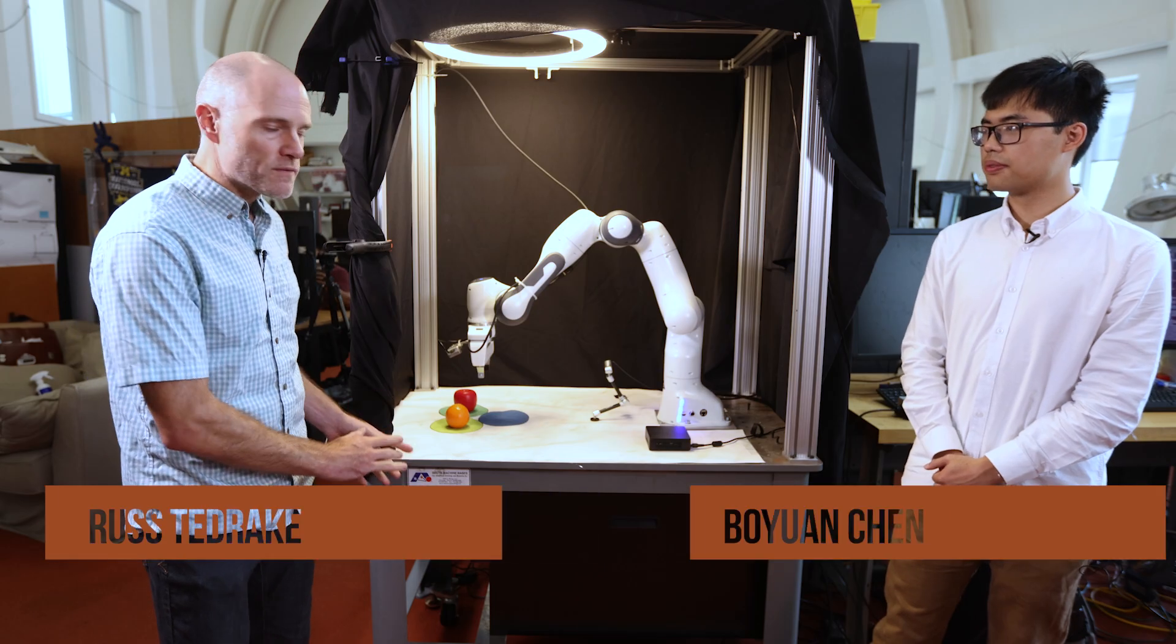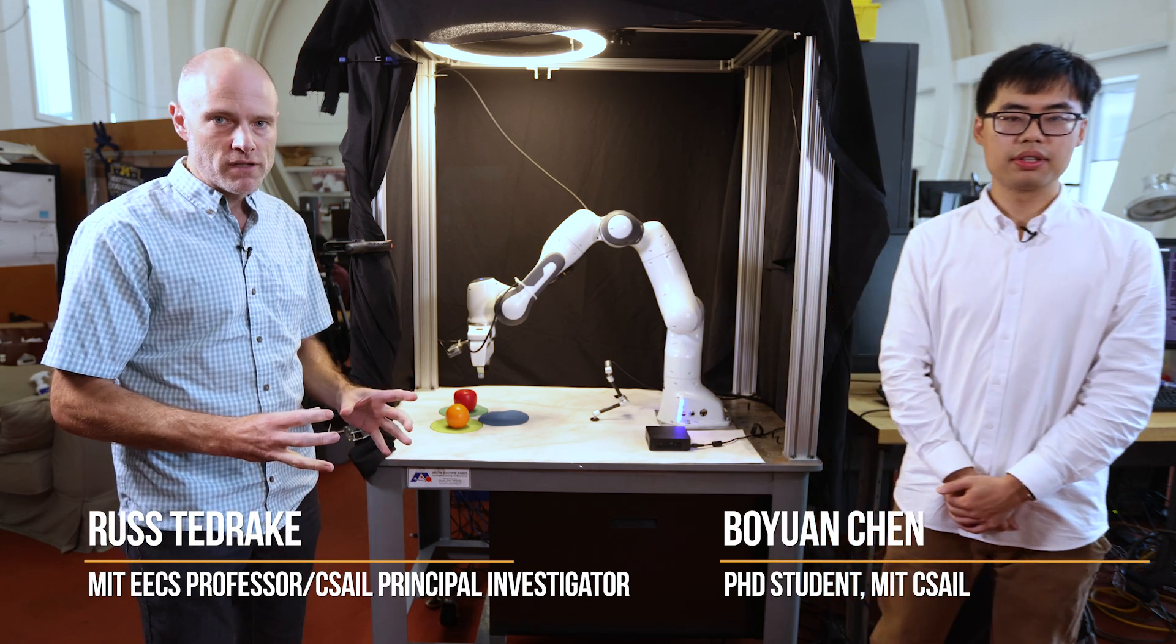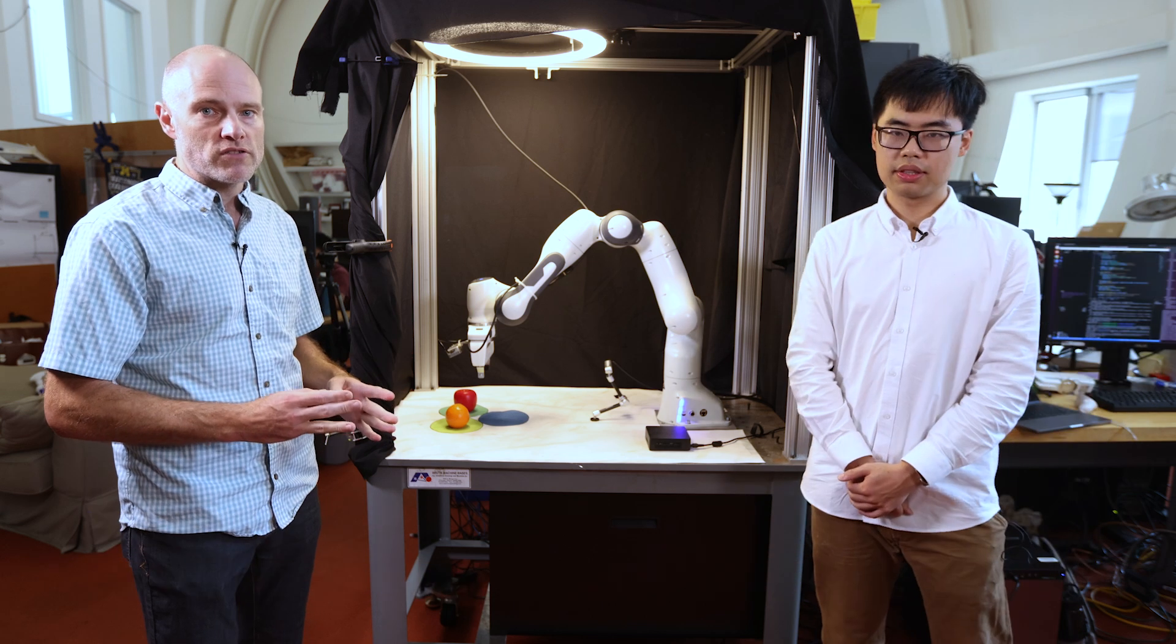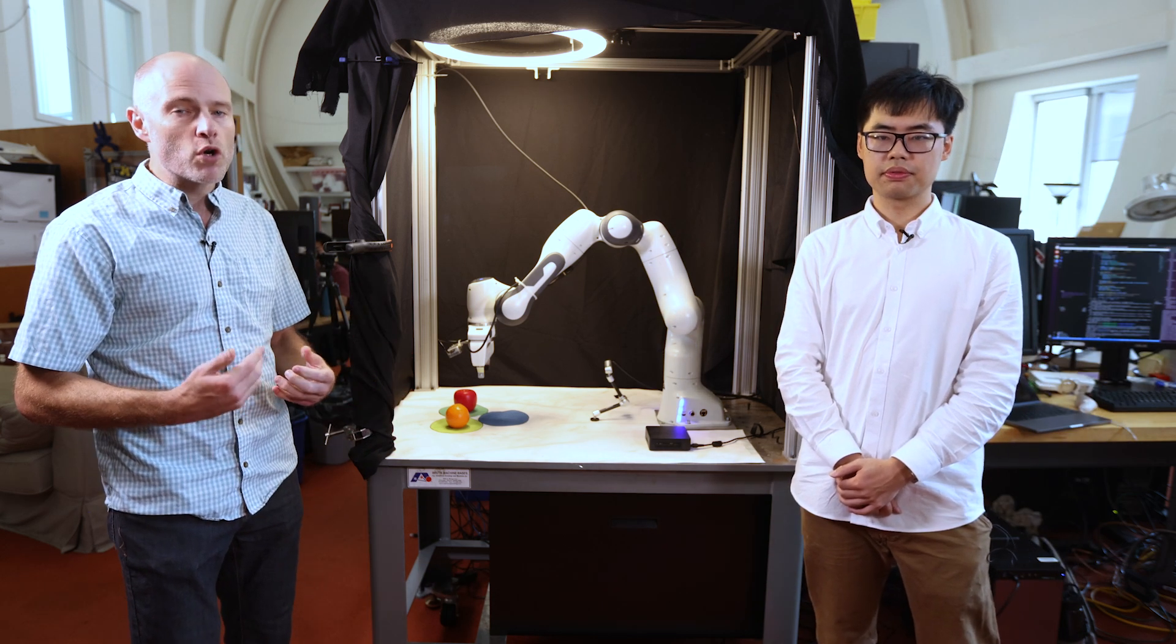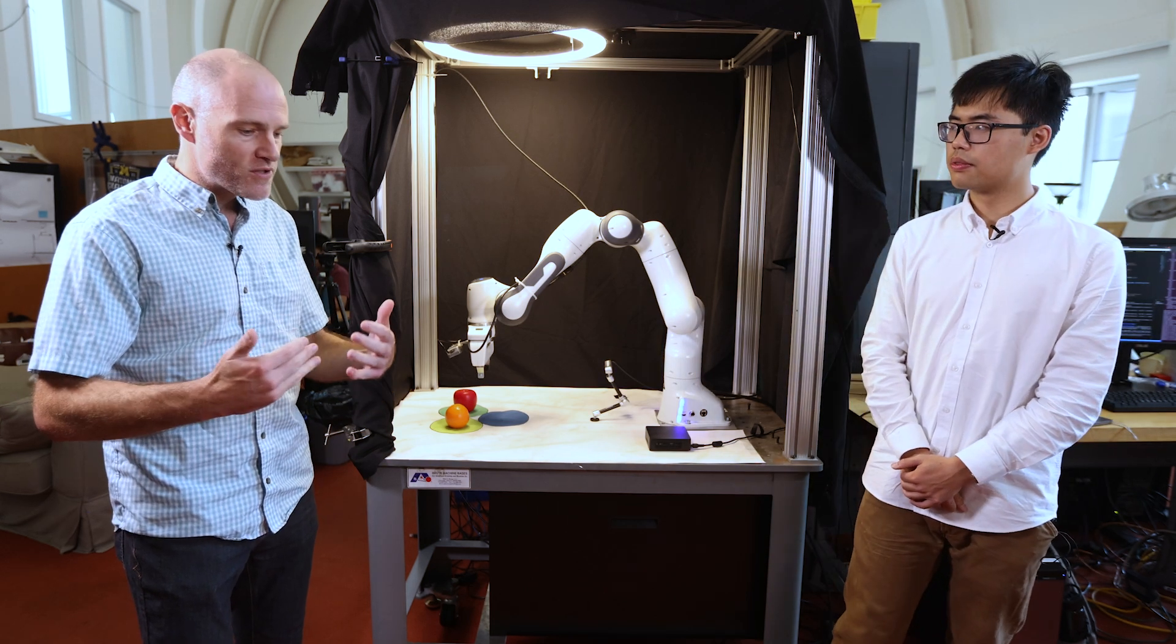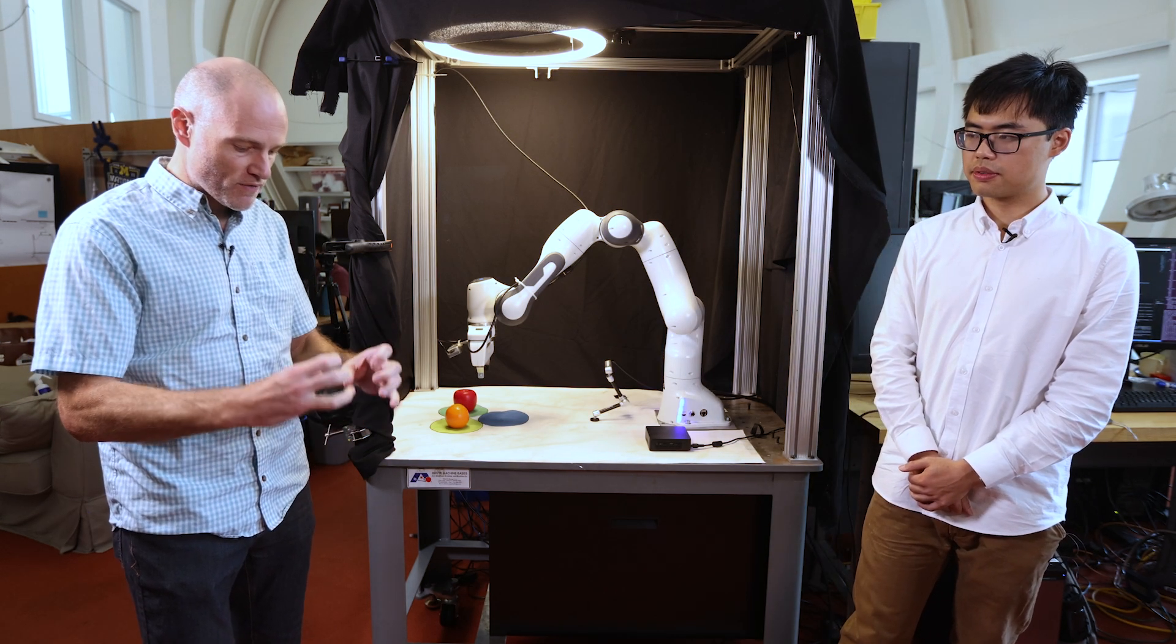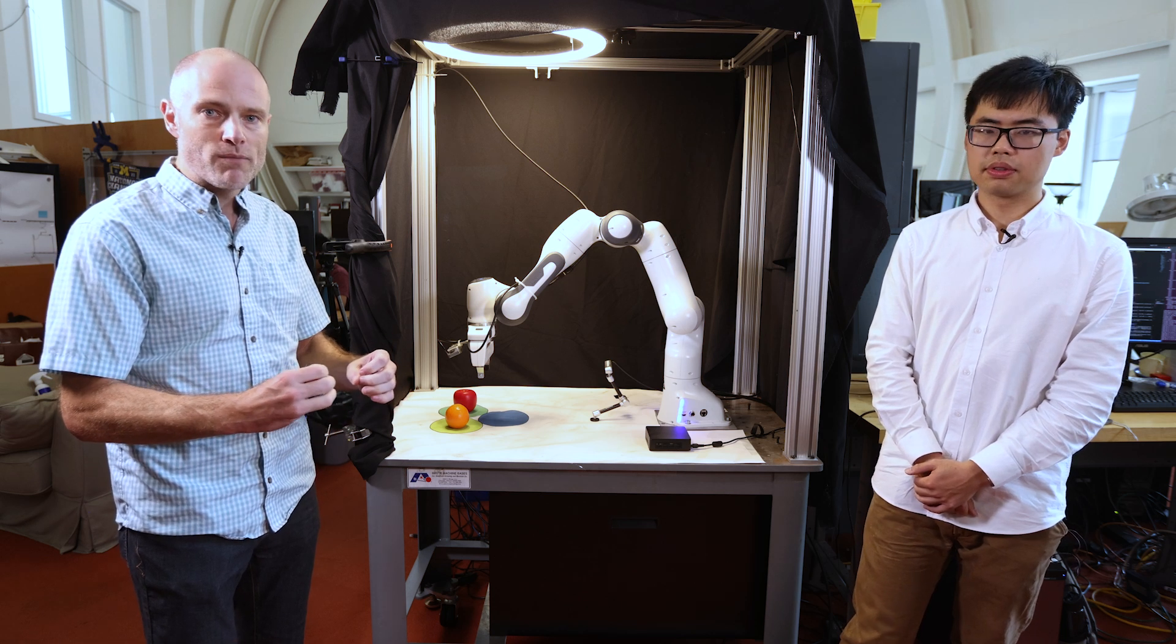Now diffusion policy can actually make robots do very complicated things with their hands, but what we've done here is come up with a really simple example where the traditional diffusion policy would fail. The reason for that is the diffusion policies we normally use actually have very little memory, so if the current situation they can see in their cameras doesn't completely describe what you need to do, then it will fail.